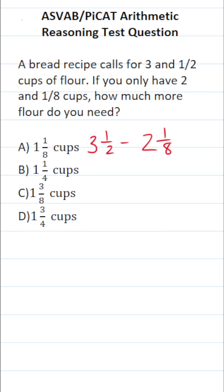Three times two is six plus one is seven. So this is seven over two minus two times eight is 16 plus one is 17 over eight.